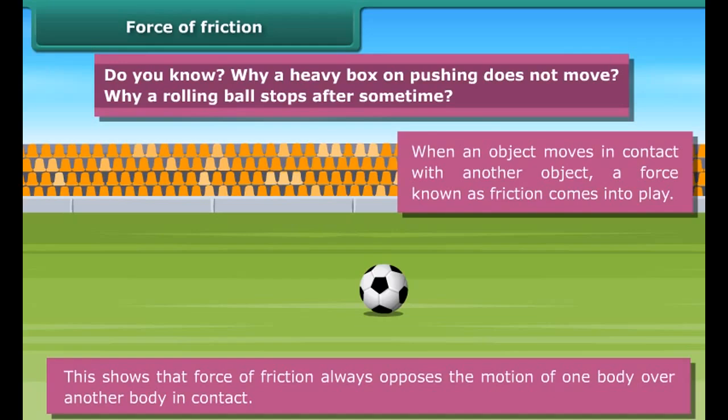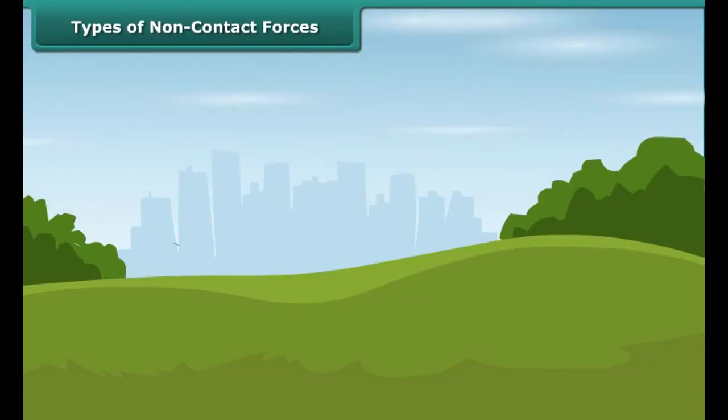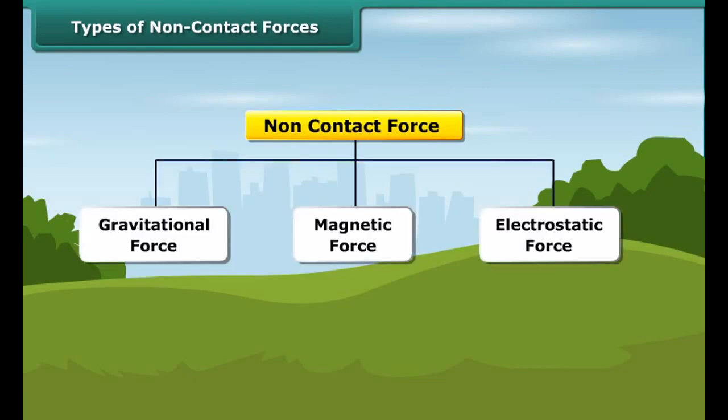When an object moves in contact with another object, a force known as friction comes into play. Note that the force of friction always acts on all objects and its direction is always opposite to the direction of motion.